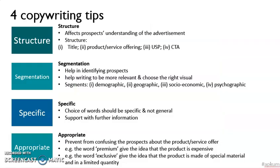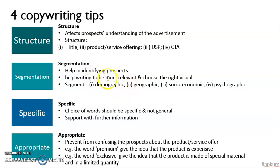When looking at copywriting techniques, there are four very important tips. Whatever method or technique you use, always remember the structure. For example, if you are using soft selling, you are not trying to sell the product but want to get people to engage and know your product better. You must also know the segmentation of customers that you want to target — demographic or geography — to engage them to the product. The words must be specific, suitable, and appropriate. Remember these four tips when you prepare information for your online posting.